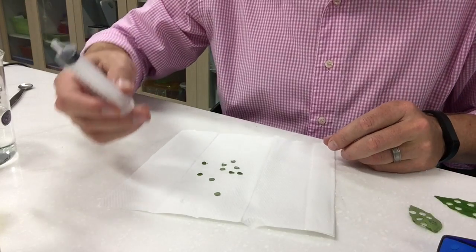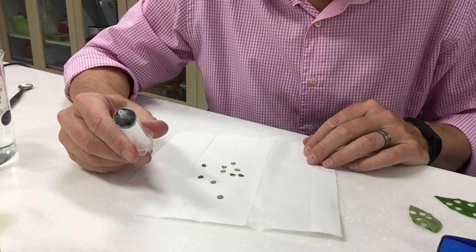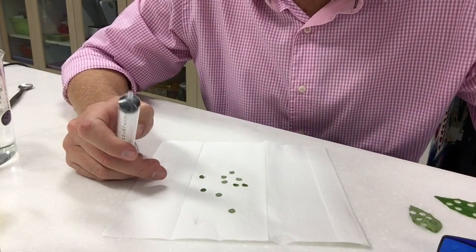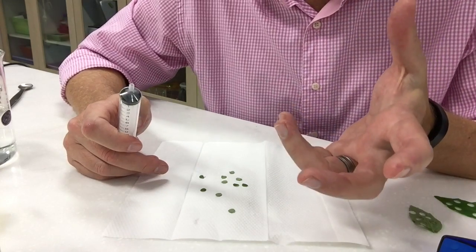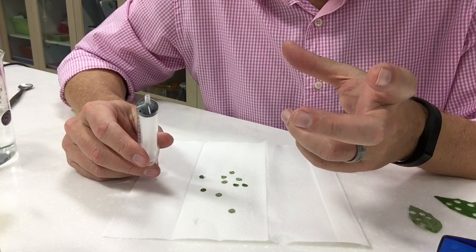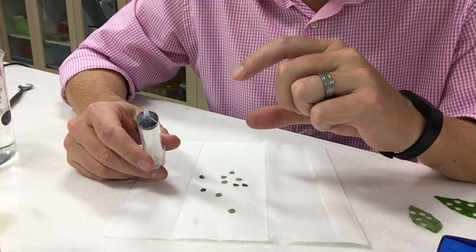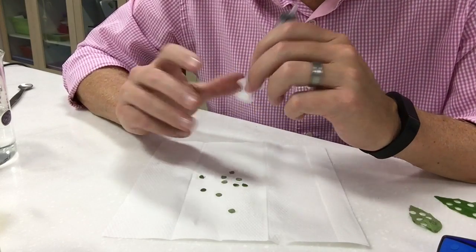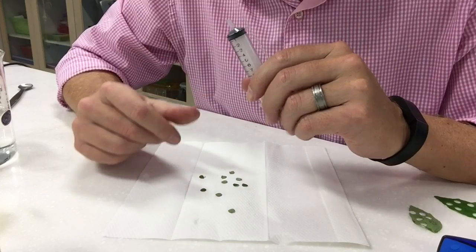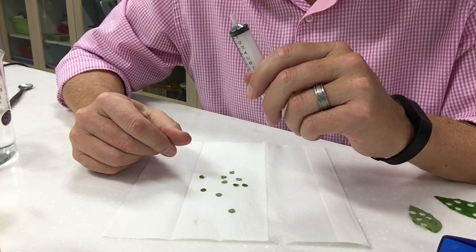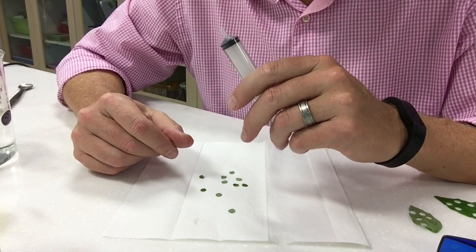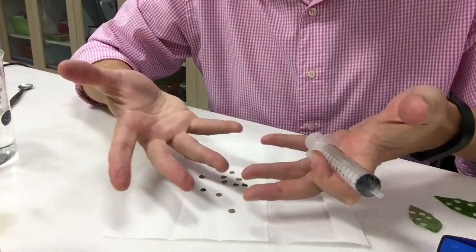Now the tricky part is going to be evacuating the air out of the leaf because what we're going to try and do is we're going to try and take all the air out of the leaf tissue so that the leaf actually sinks in solution. And then what we're going to do is shine a light on them and hopefully those leaf discs will rise because of the production of oxygen that gets trapped in the leaf and then they come on up.